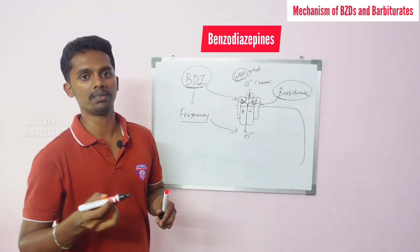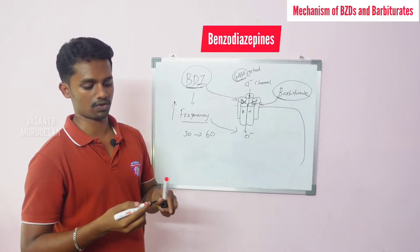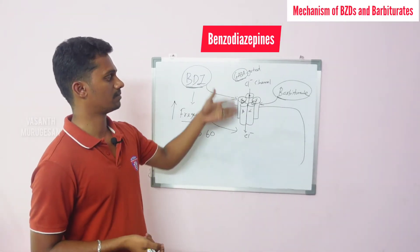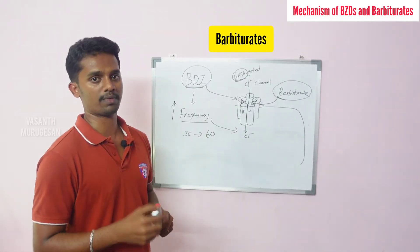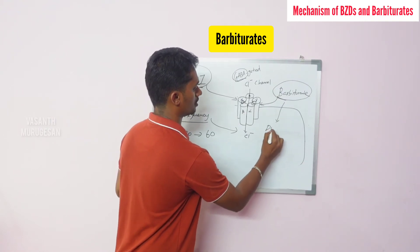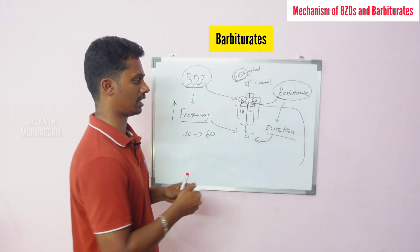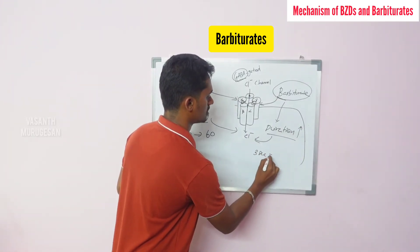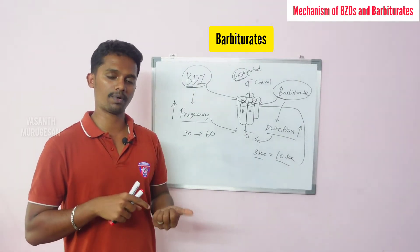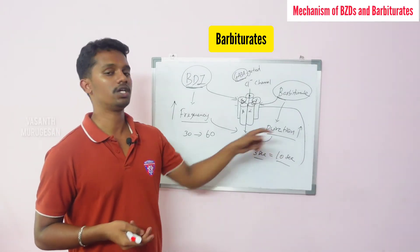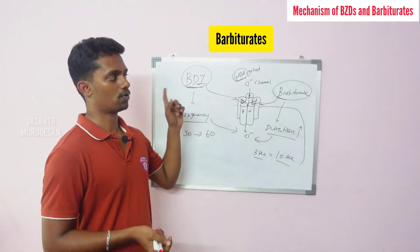There is a slight difference. Benzodiazepines increase the frequency of chloride channel opening. That means if the chloride channel opens 30 times per minute normally, using Benzodiazepines it opens 60 times — the rate increases, so more chloride enters the cell. Barbiturates, on the other hand, increase the duration of chloride channel opening. If the channel is open for 3 seconds normally, with Barbiturates it stays open for 10 seconds. So the time increases — more chloride enters. These are the two small differences.